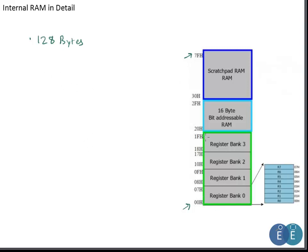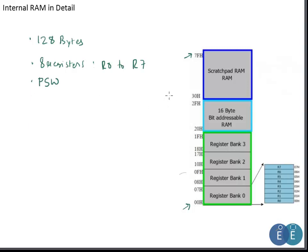Within that 128 bytes of RAM, we have four register banks and each register bank has eight registers, labeled R0 to R7. At any one time the 8051 can access only one of the four register banks. The Program Status Word (PSW) is used to switch between register banks if required, giving us about 32 general-purpose registers in total.